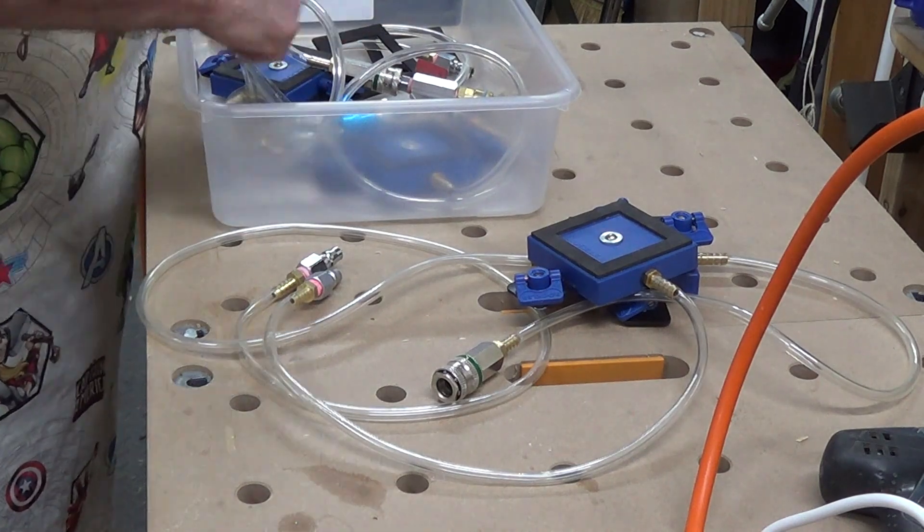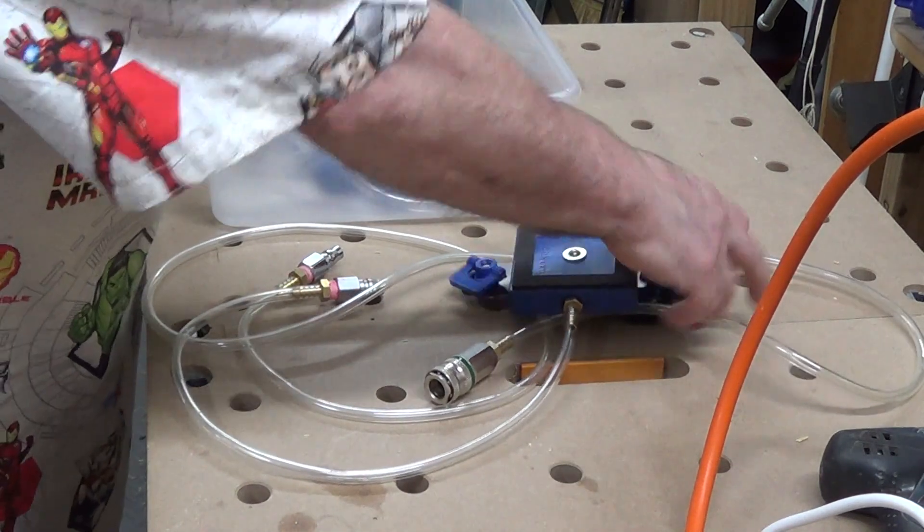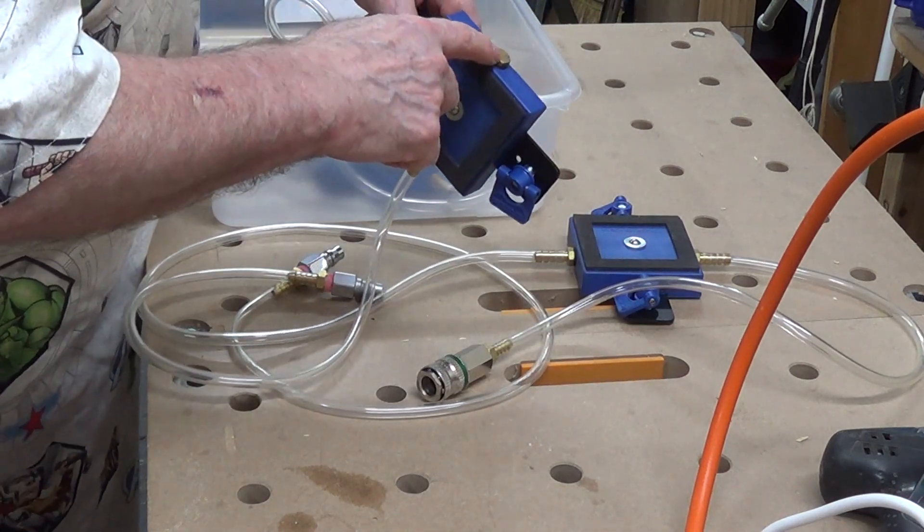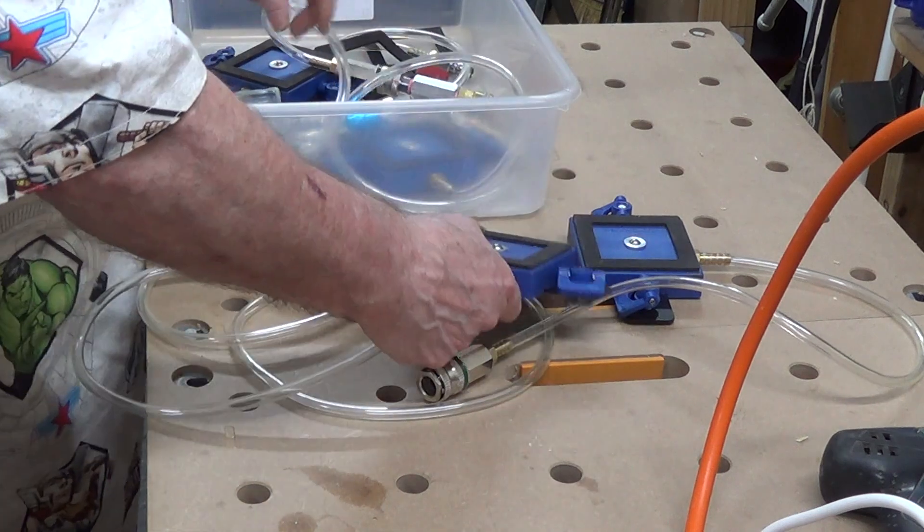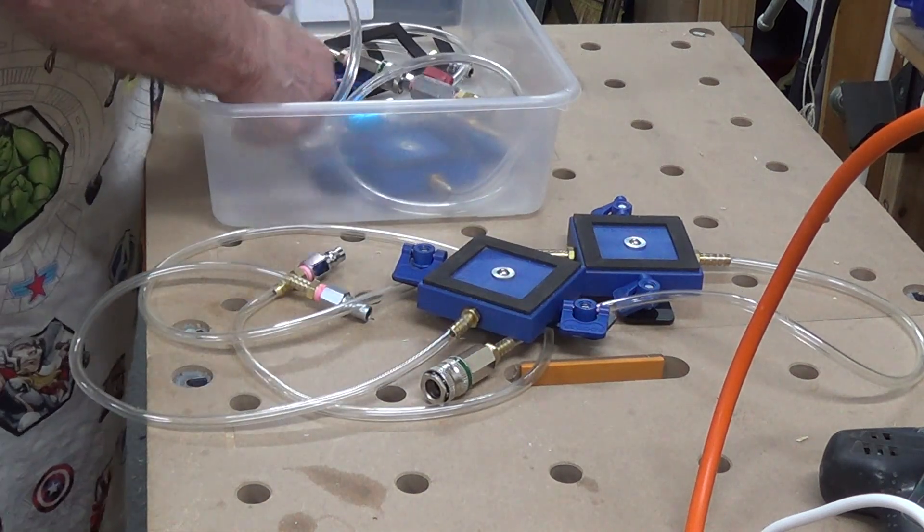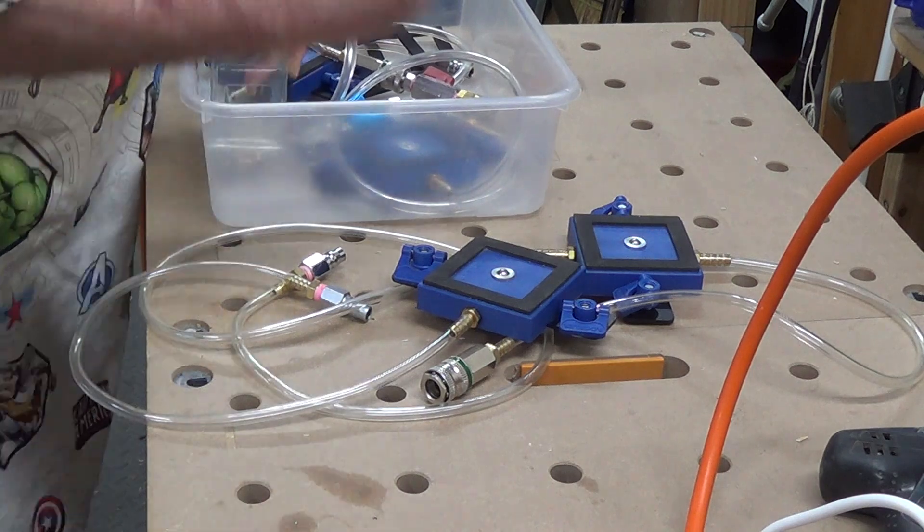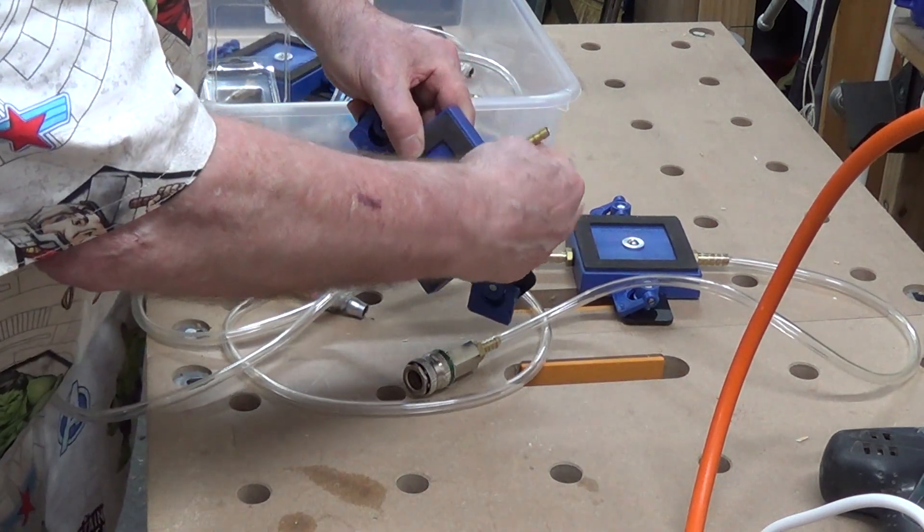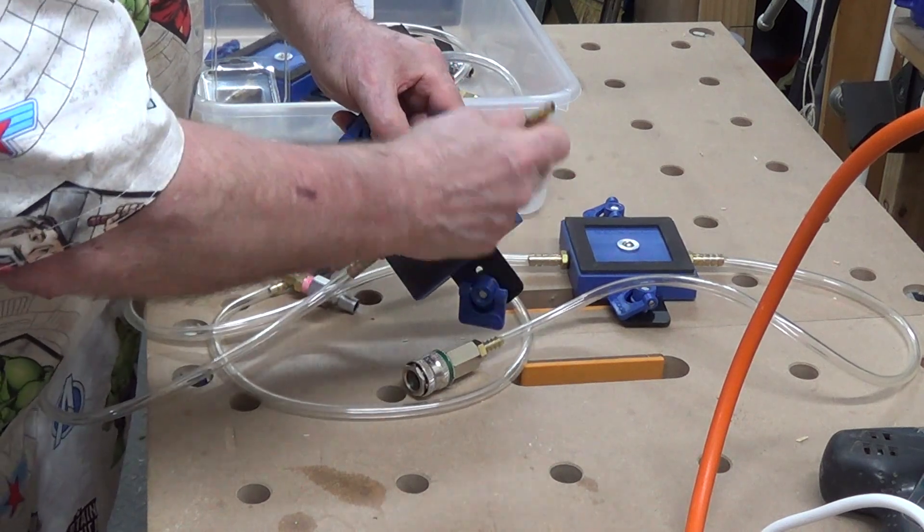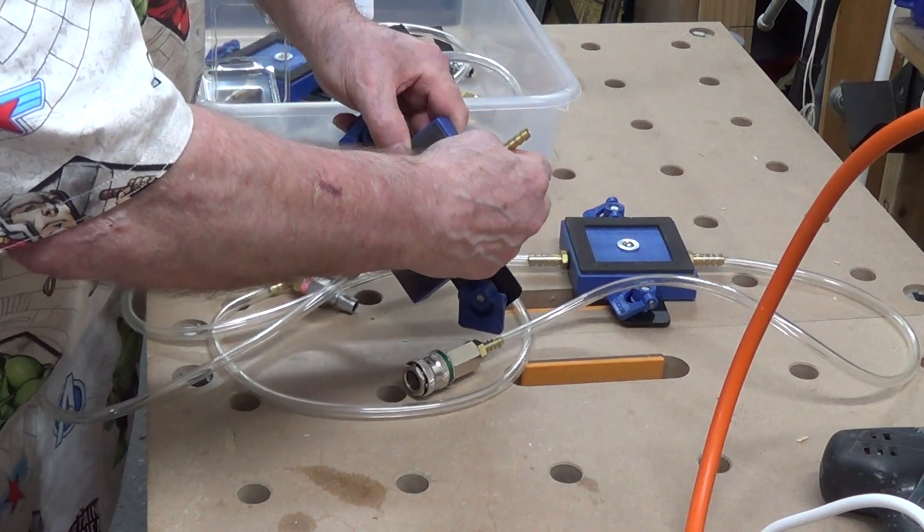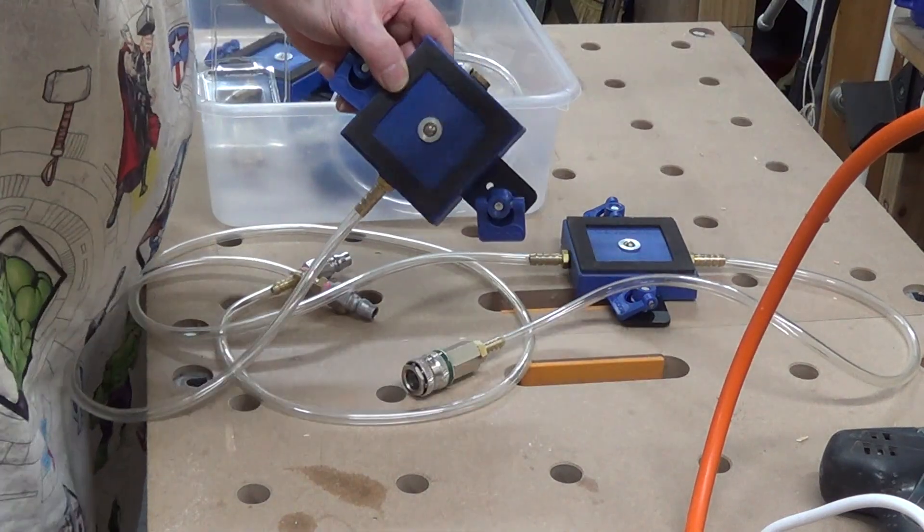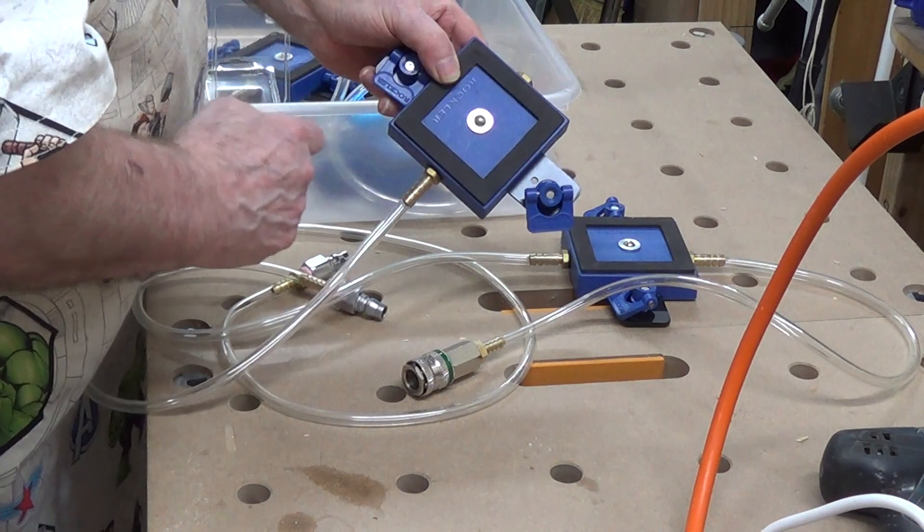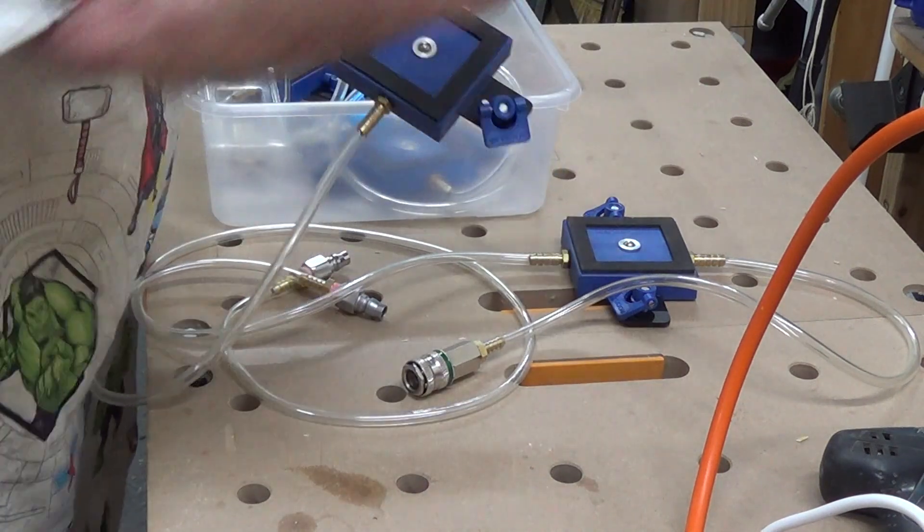And, you also get, because one of them has a Terminator nut on it. You get a spare one of these little units, so you can then replace that nut, or that hex bolt, with that, so you can then piggyback other shop vacuum pods onto it, and chain them in together.